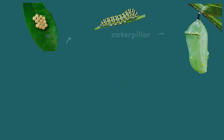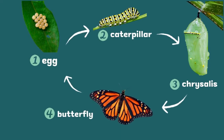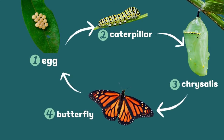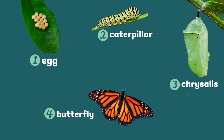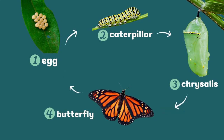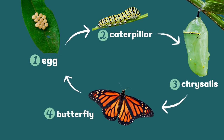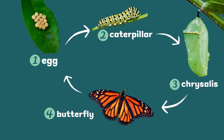One, the egg. Two, the caterpillar. Three, the chrysalis. Four, the adult butterfly. This process of changing shapes is called a metamorphosis.